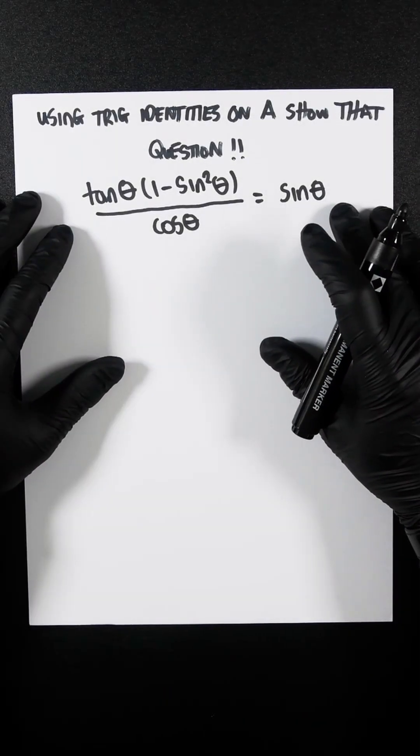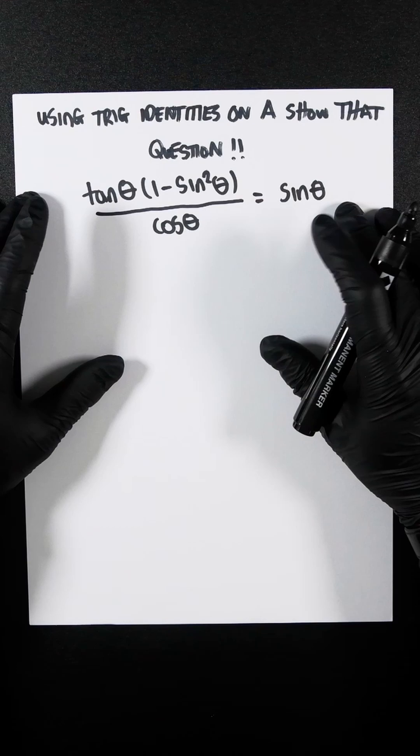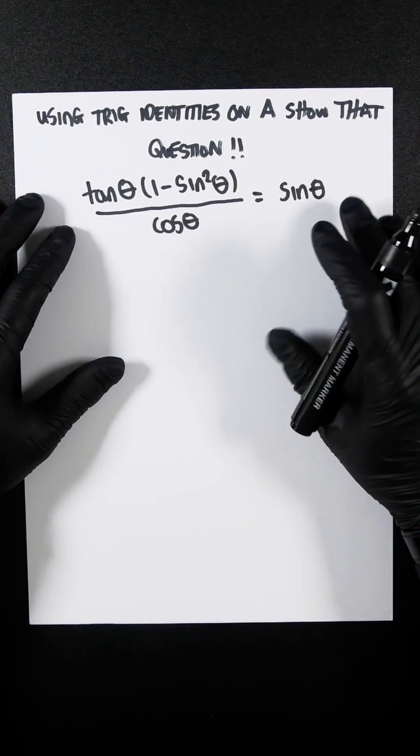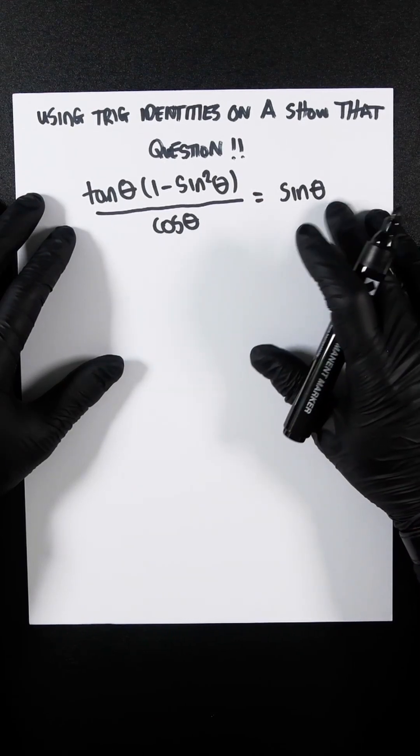We've got another trig identity that we're going to try and show is equal on both sides. Let's tackle the left-hand side because there's not really much that we can do here.